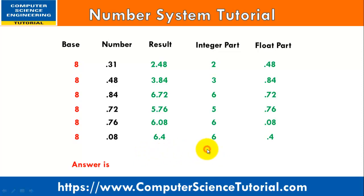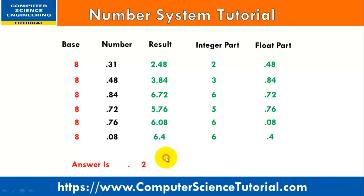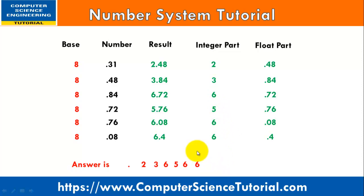I write the answer from top to bottom order: 2, then 3, then 6, then 5, then 6, and 6. So this is our octal representation of the decimal number 0.31, written as 0.23656... base 8.